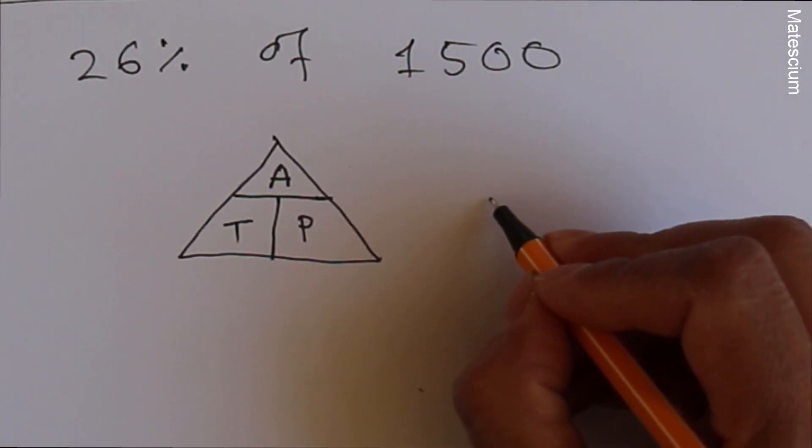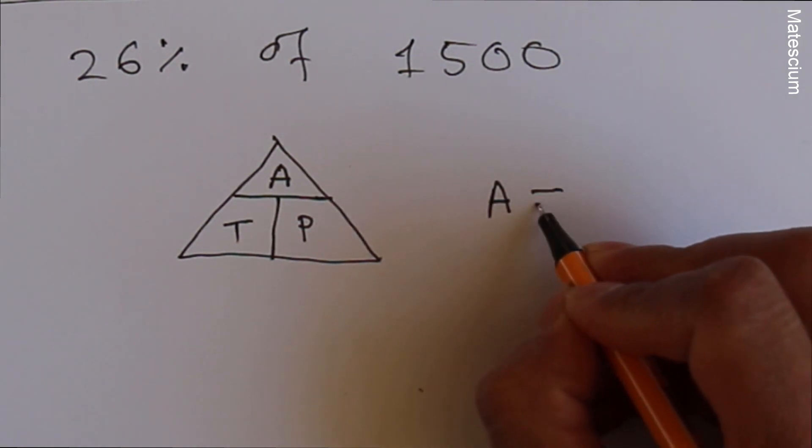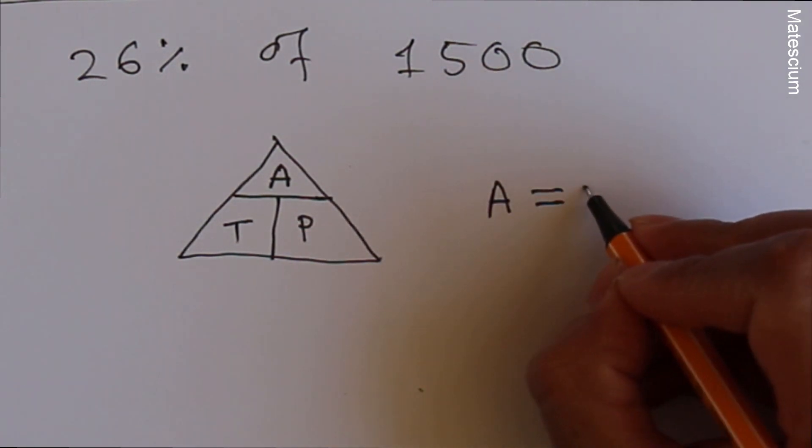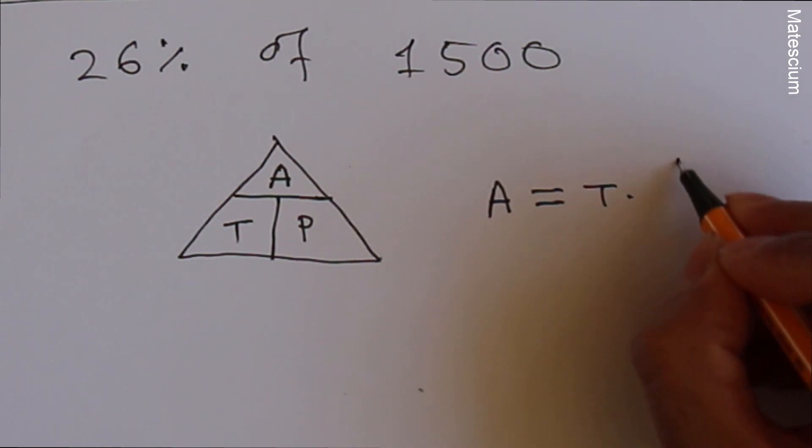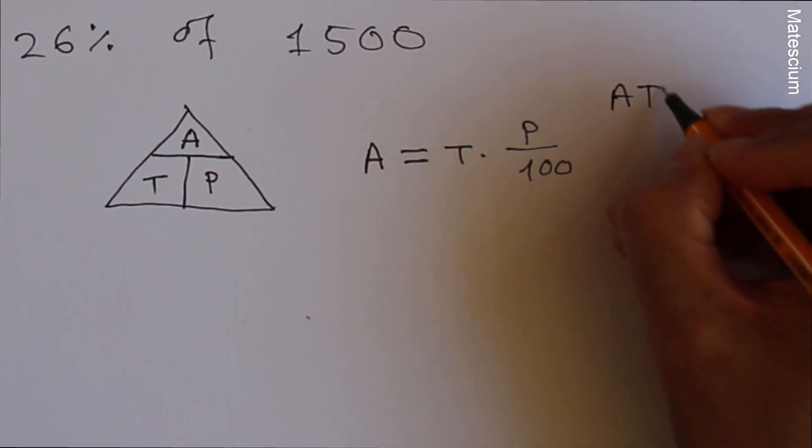And this ATP formula is asking value. That means we have to find out which is A equals T times P over 100. And we called it ATP formula.